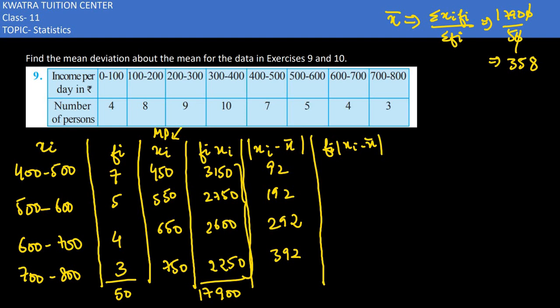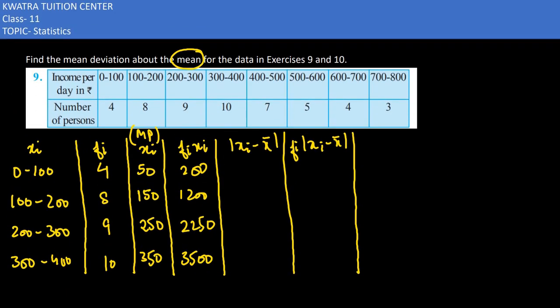And then we will take the 4 from before. We have 50 minus 358, which is 308 in absolute value. Then we have 208. Then we have 108. Then we have only 8.